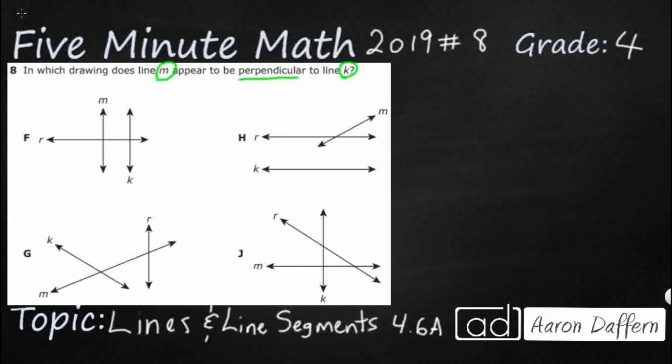And so we can actually represent that like this. We want M, here is actually our symbol for perpendicular - it looks like an upside down capital T - to line K.